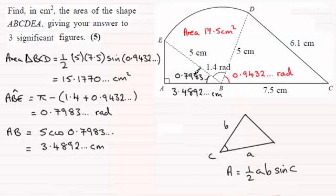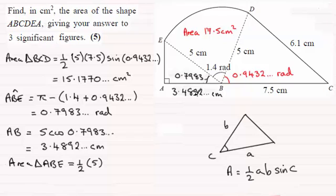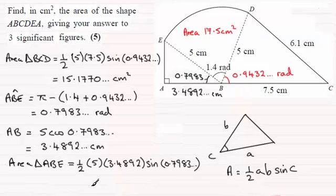With two sides and the included angle, I can now find the area of triangle ABE. Area of triangle ABE = ½ × 5 × 3.4892 × sin(0.7983 radians). Make sure you're in radians mode on your calculator, and you should get 6.2473 centimetre squared.